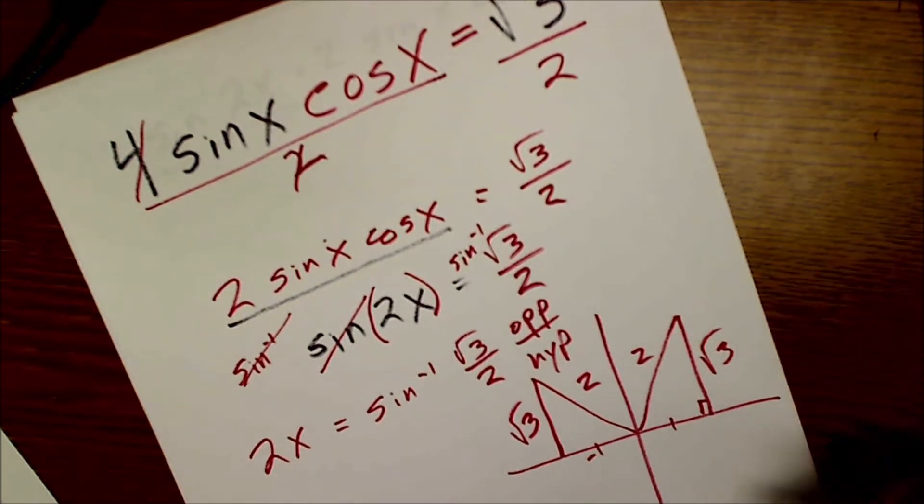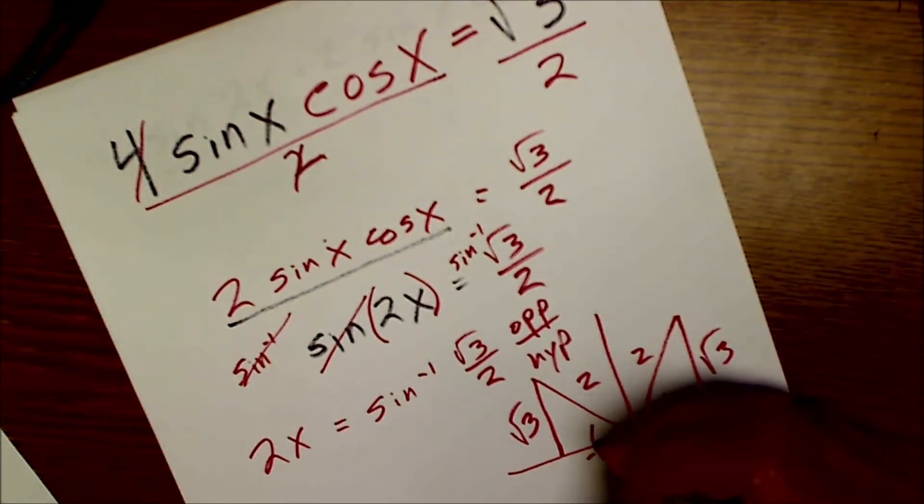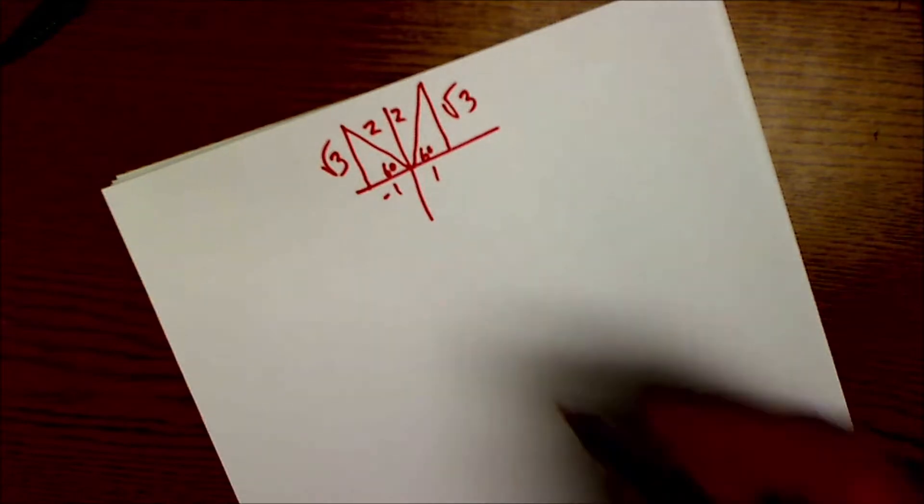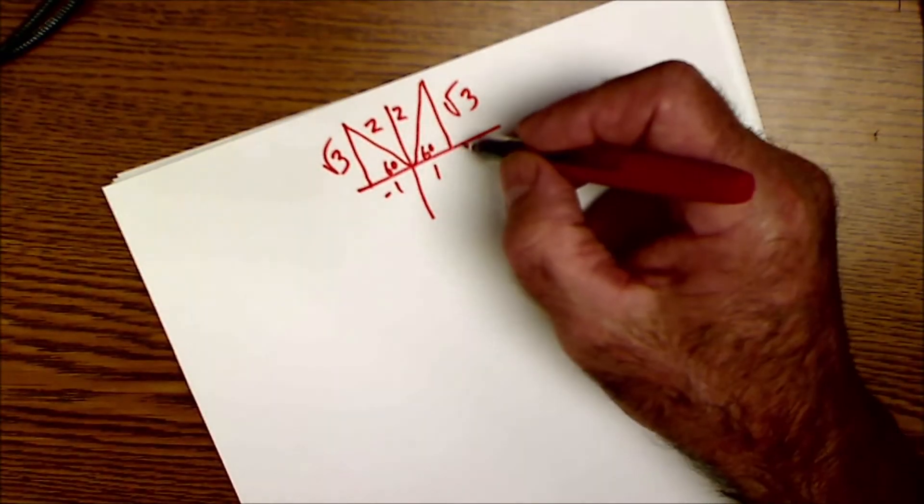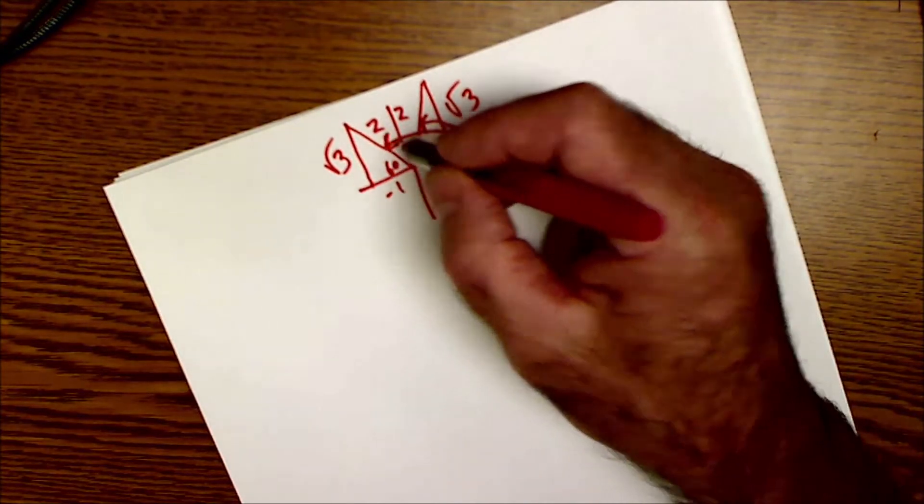I recognize that as a 30-60 triangle. So this angle is 60 degrees and this angle is 60 degrees. I redrew this triangle. I have a little more room. So one solution is 60 and one solution is 120.